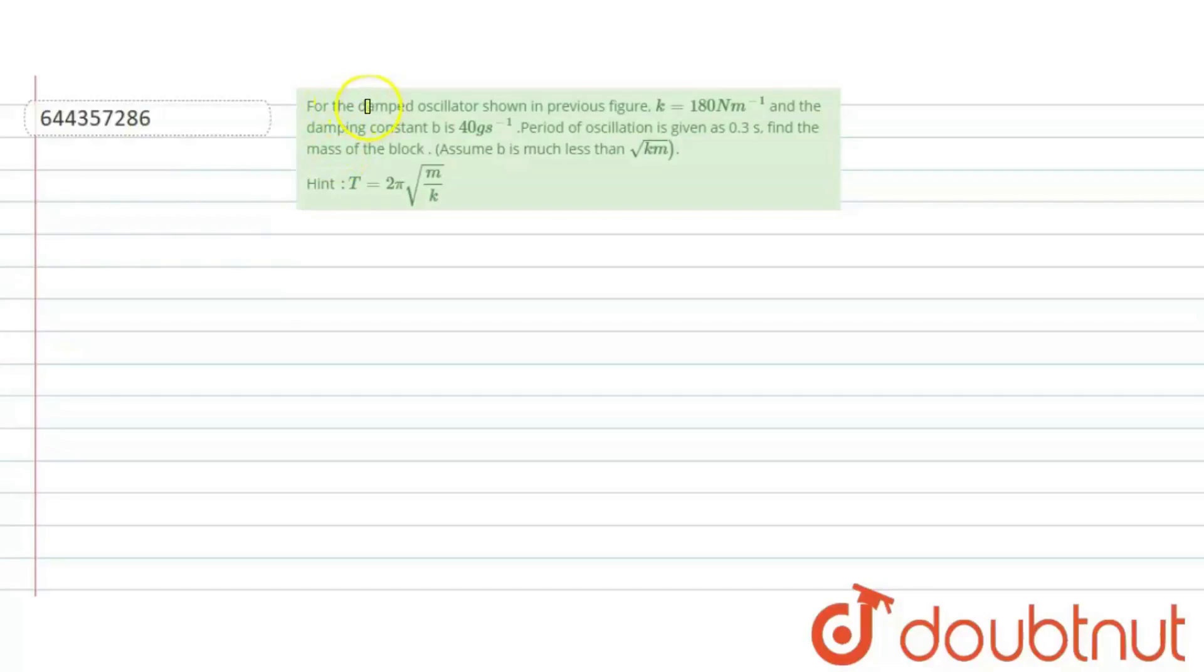Question is, for the damped oscillator shown in previous figure, k equal to 180 newton per meter and the damping constant b is 40 gram per second.